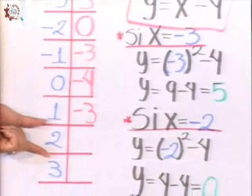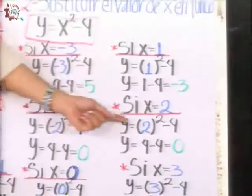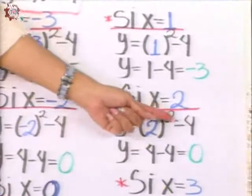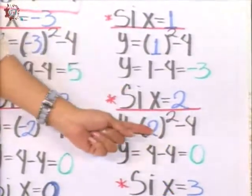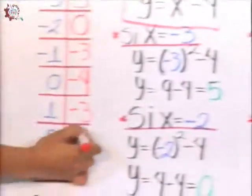When x is 2, if x is 2, I substitute this 2 in this same function, and it would be 2 al cuadrado minus 4. 2 times 2 equals 4, minus this 4, gives me 0. And I place the 0 here.